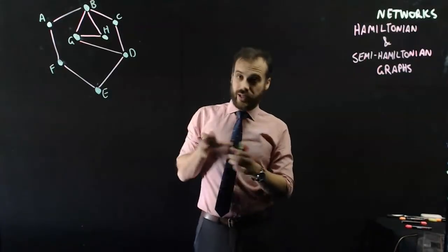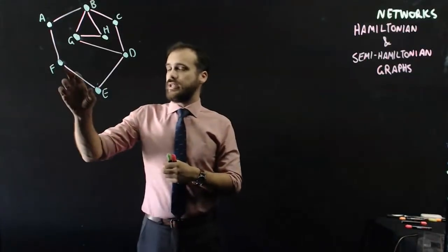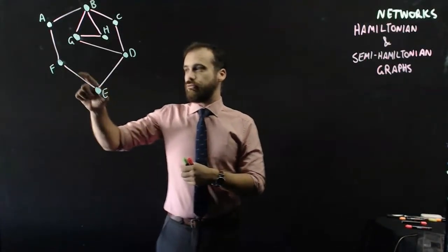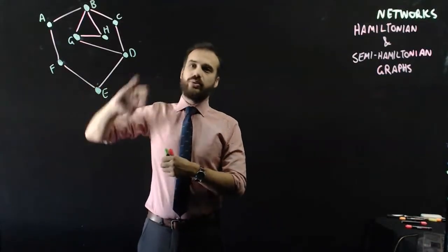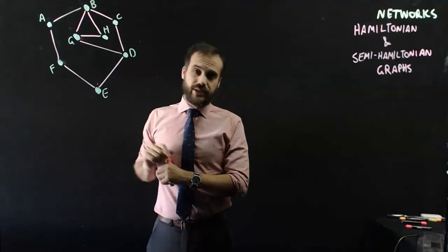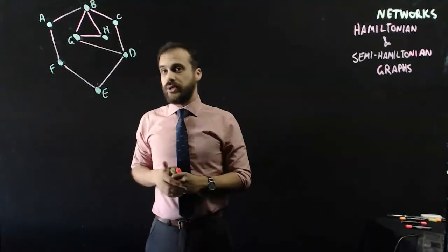Semi-Eulerian and Eulerian graphs, they were interested in edges. You couldn't repeat edges, you couldn't go down the same road twice. And if you could get the whole way around the graph and not repeat the same edge, then that was an Eulerian graph.